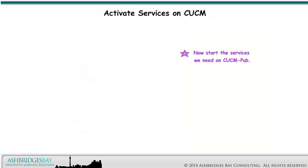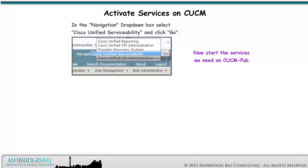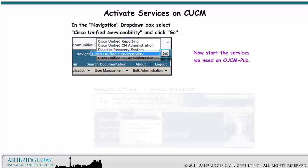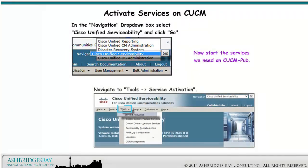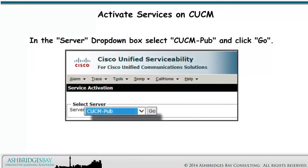Now start the services we need on CUCMPub. In the Navigation drop-down box, select Cisco Unified Serviceability and click Go. Navigate to Tools > Service Activation. In the Server drop-down box, select CUCMPub and click Go.